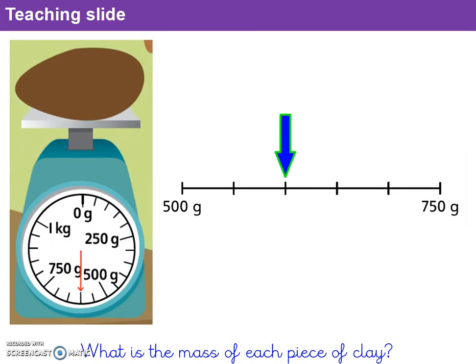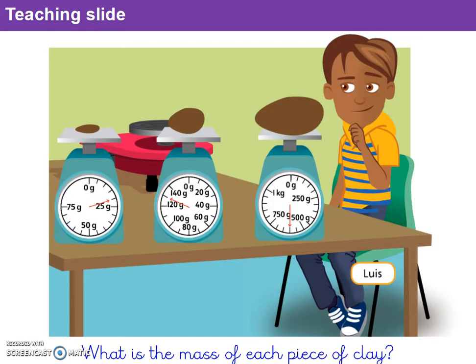For the final scale, I've again made it into a horizontal line, labeling 500 grams and 750 grams on either side of the arrow. Using my knowledge that each interval is worth 50 grams, I can find that the mass of this clay is 600 grams. So for question 1b: the first piece of clay has a mass of 20 grams, the second piece has a mass of 130 grams, and the third piece has a mass of 600 grams.